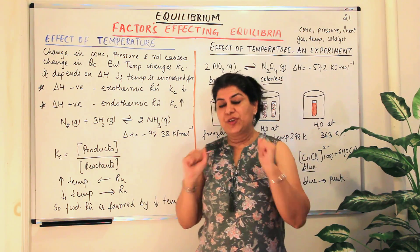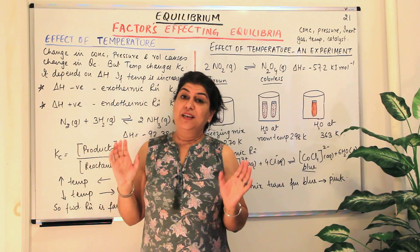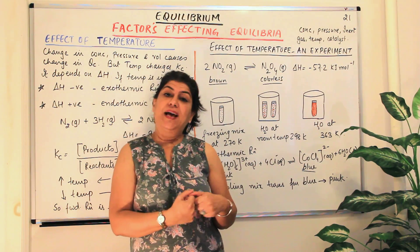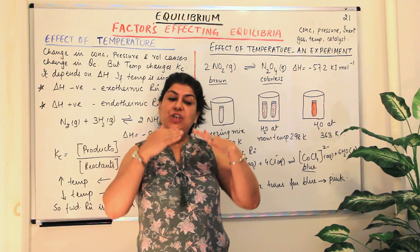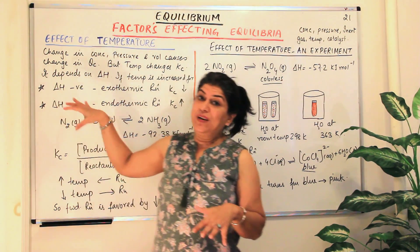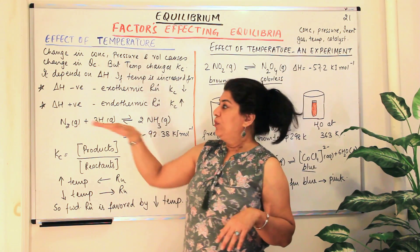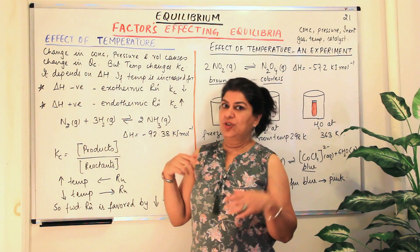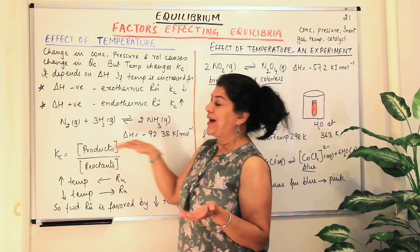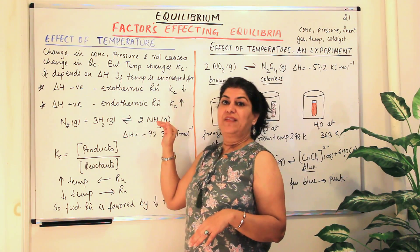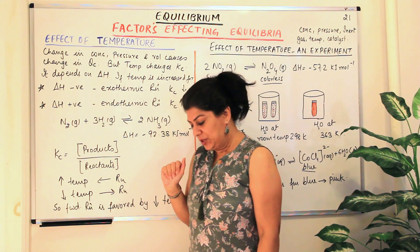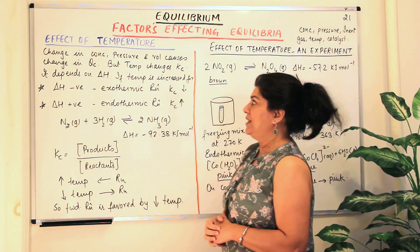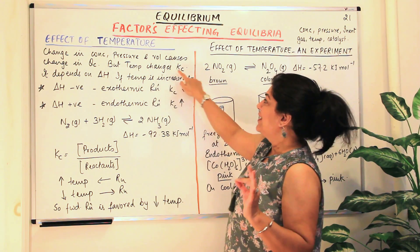How does temperature affect equilibrium? We know from thermodynamics that a reaction in which heat is absorbed is known as an endothermic reaction, and a reaction in which heat is released is known as an exothermic reaction. In equilibrium, the reaction proceeds in both directions. So if the reaction is exothermic in the forward direction, it automatically becomes endothermic in the backward direction. The change in concentration, pressure, and volume causes a change in Qc, but a temperature change affects Kc.